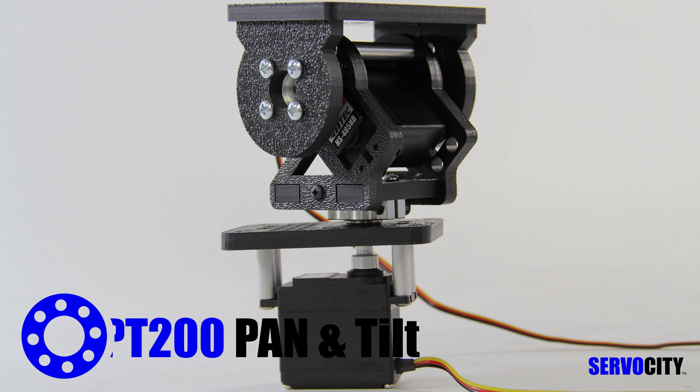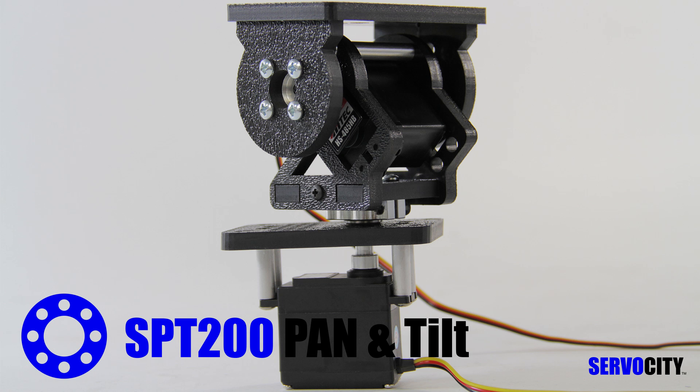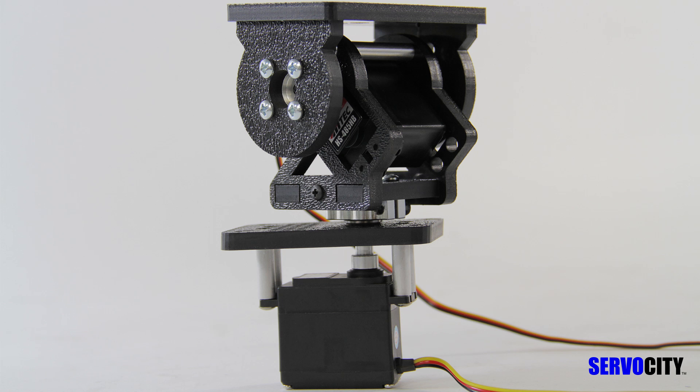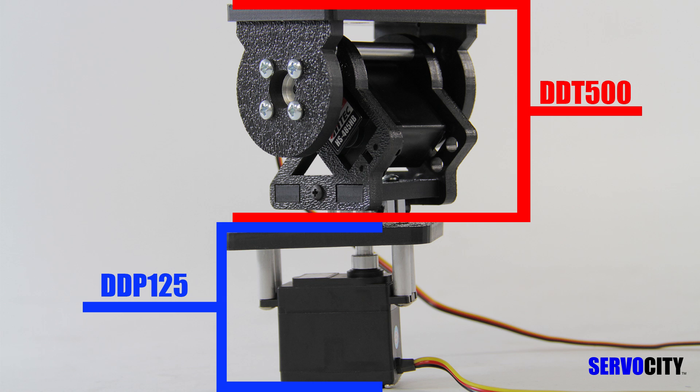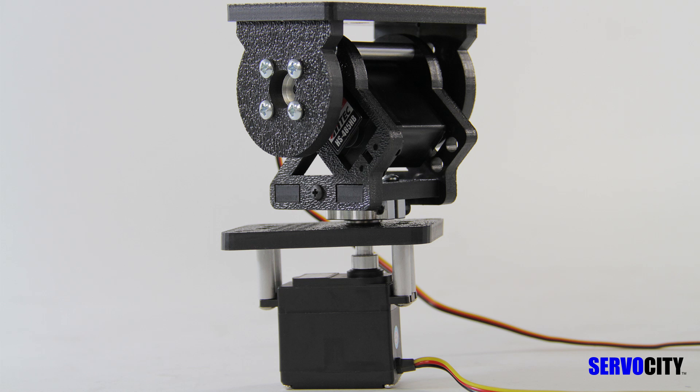Hello, today we are assembling the SPT200 pan and tilt system. It is a kit comprised of two sub-assemblies, the first being the DDT500 which we will be assembling in this video, and the second is the DDP125 which is assembled in a separate video. A link to that video can be found in the description.